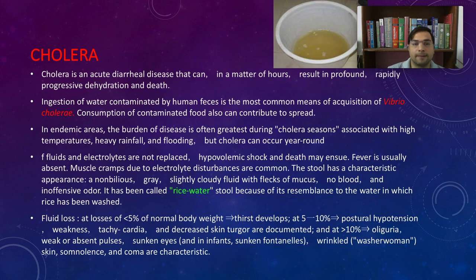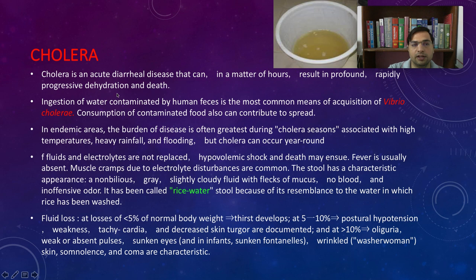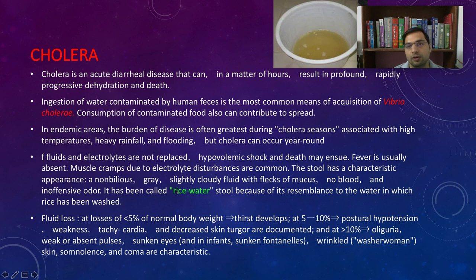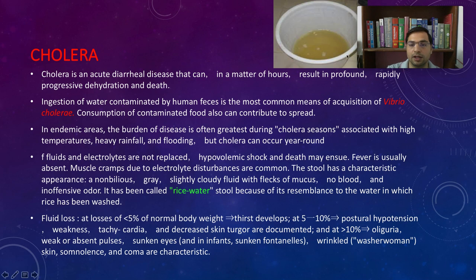Next is cholera — a very important diarrhea-causing bacteria. The disease is cholera; the bacteria is Vibrio cholerae. It results in profound, progressive diarrhea leading to progressive dehydration and death. The stool looks like rice water — that is what cholera stools are called — rice water stools, because they resemble the water in which rice has been washed.